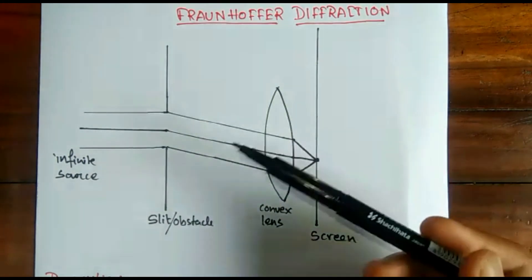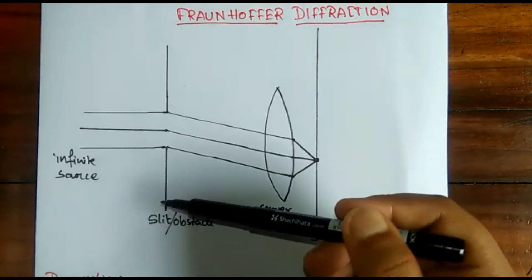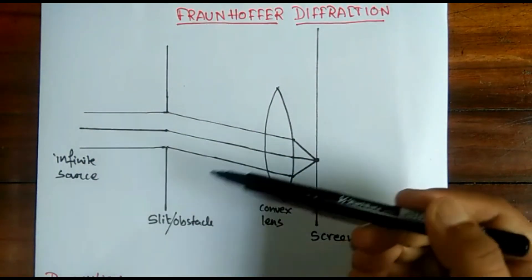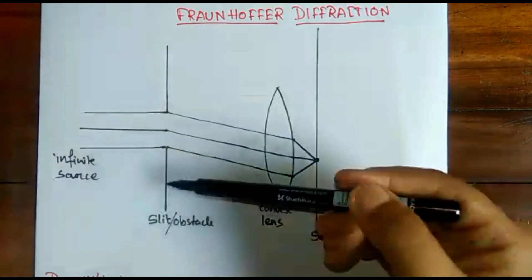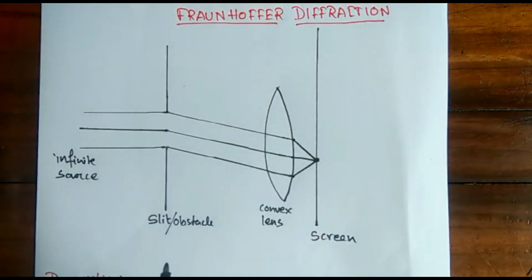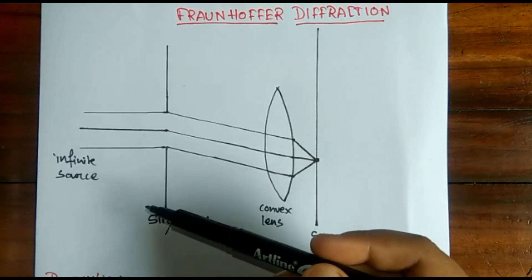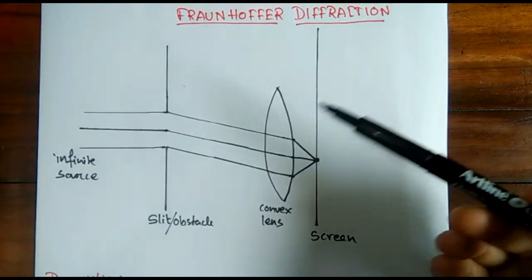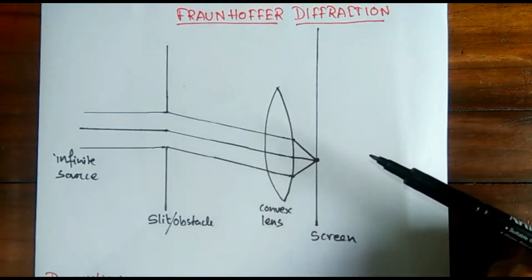In Fraunhofer diffraction, we will study diffraction. We cannot just use a single slit like the Fresnel diffraction, but we can use multiple slits, double slits, and as many number of slits as you need in Fraunhofer diffraction. So that's an advantage.